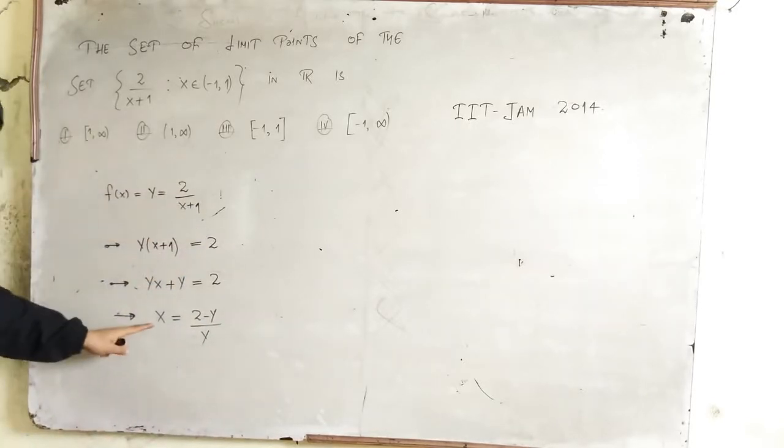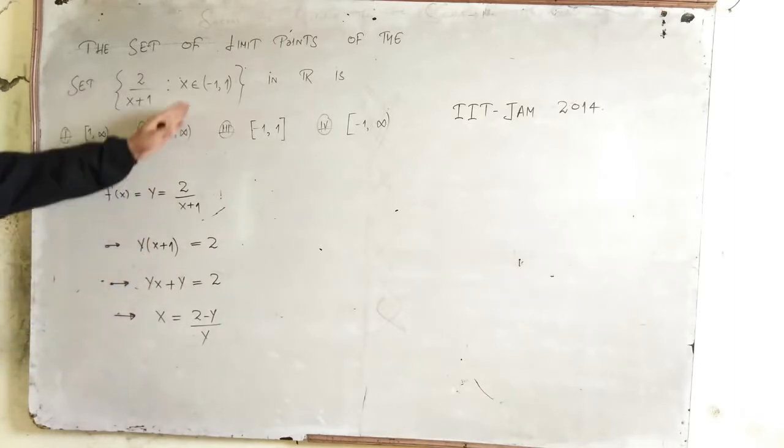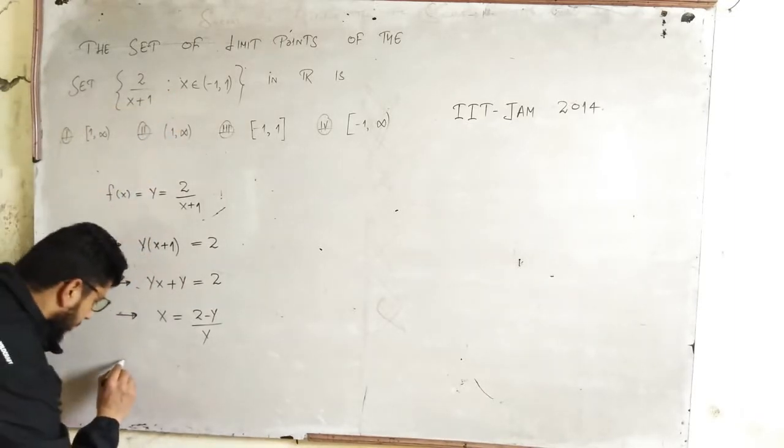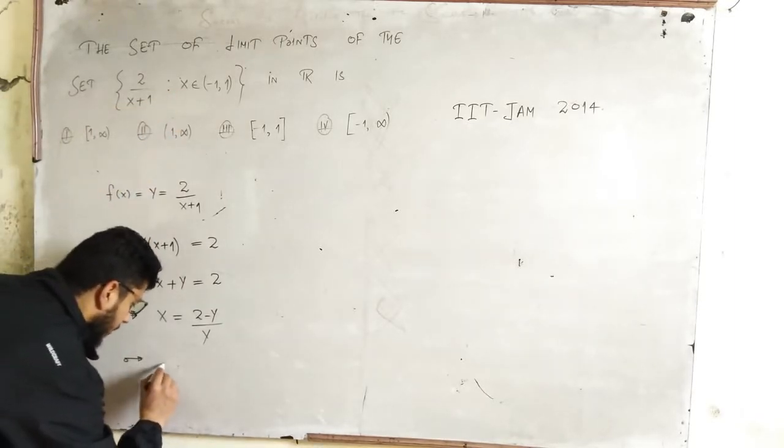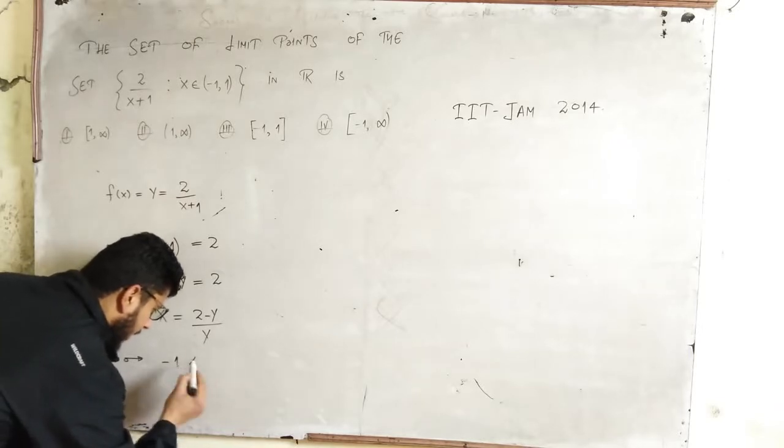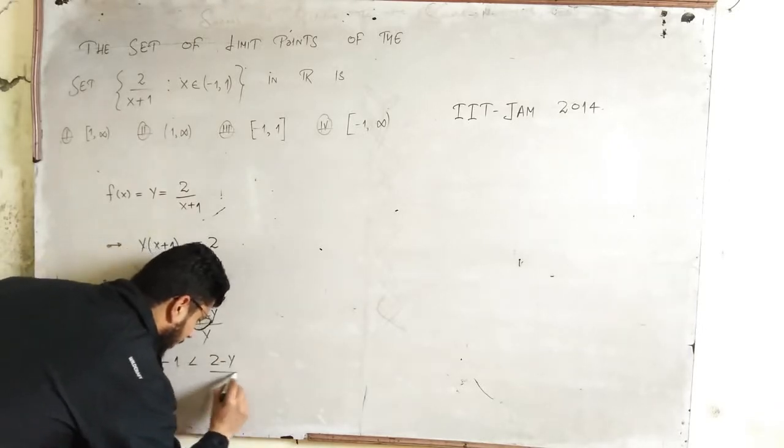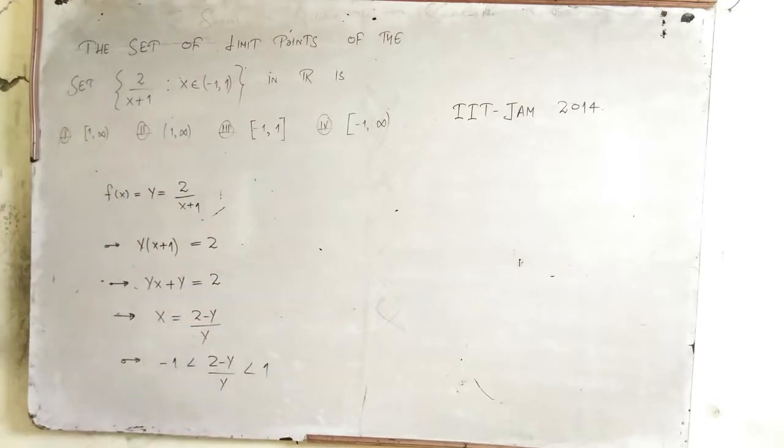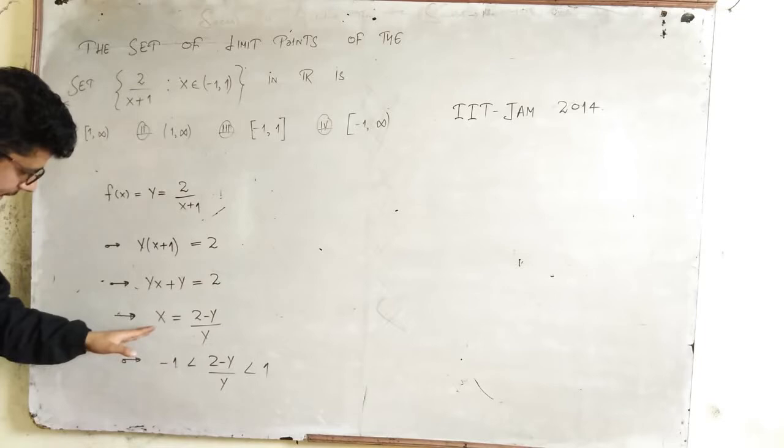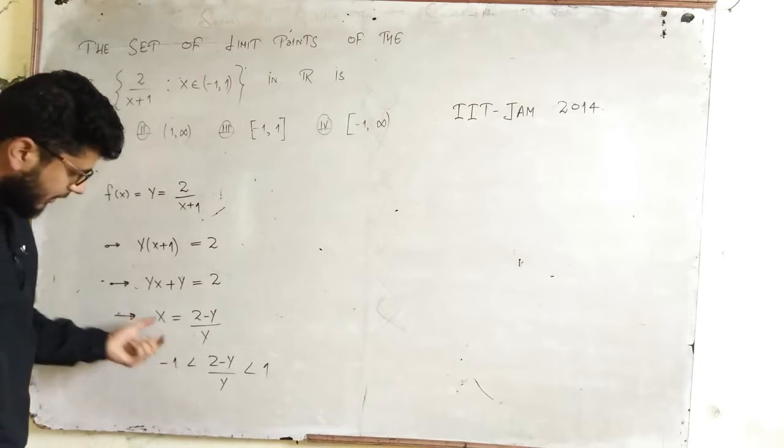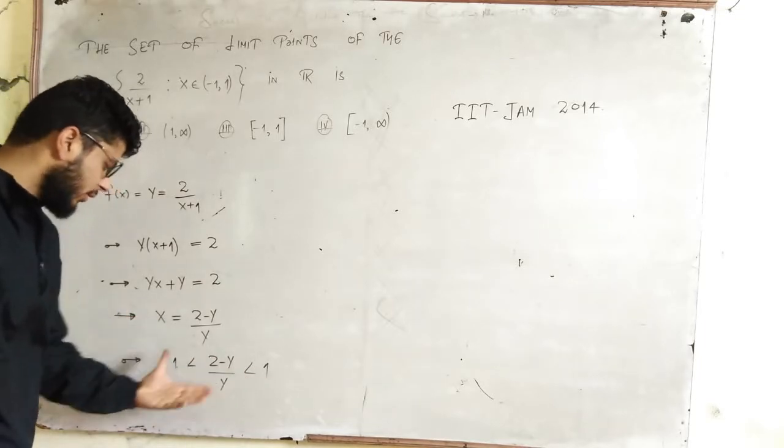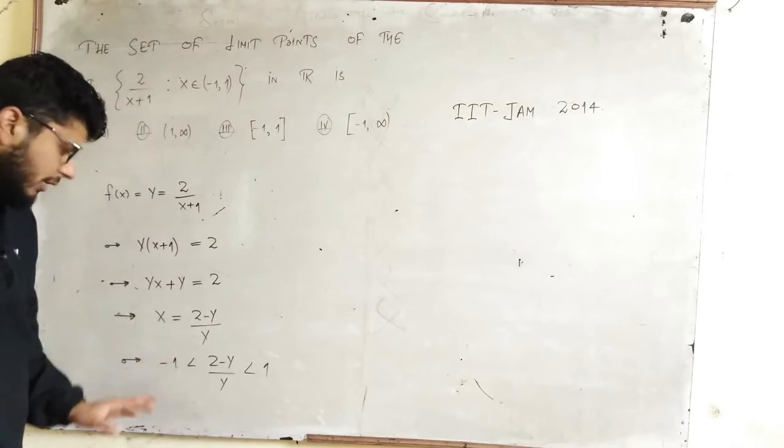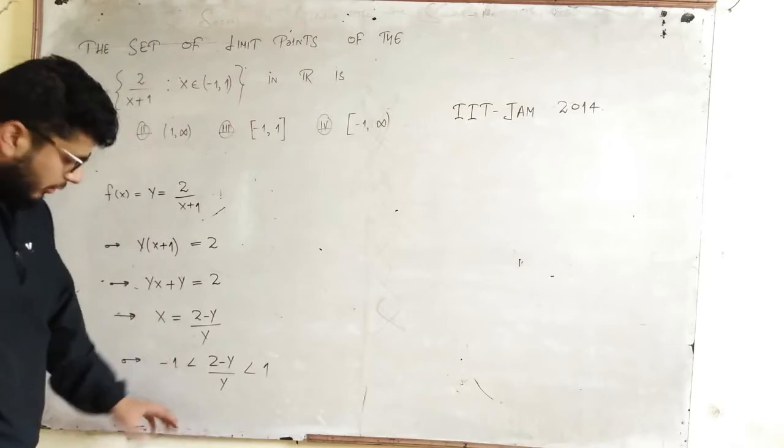This implies x equals (2-y)/y. Now the restrictions on x are given, so which implies -1 < (2-y)/y < 1. Since x is less than 1 and greater than -1, this means this is also less than 1 and greater than -1. Now you will solve both of these inequalities.